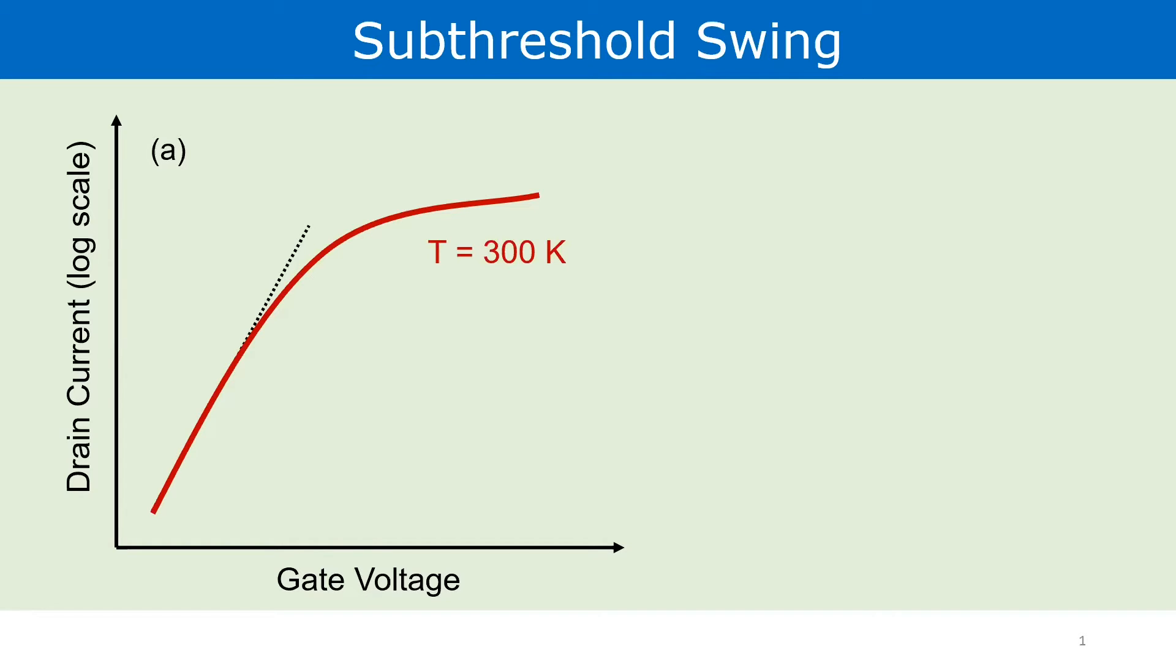Let's dive right into what subthreshold swing is and then we'll understand why the Boltzmann limit doesn't hold true. Here I have shown the standard drain current versus gate voltage characteristic of a bulk MOSFET. We know that in the weak inversion regime, the drain current varies exponentially with the gate voltage and thus we observe a straight line characteristic in the log scale.